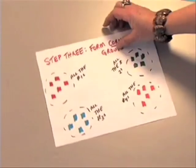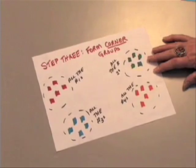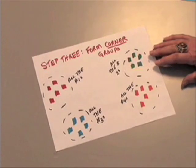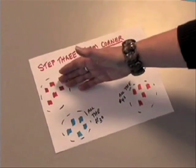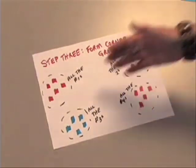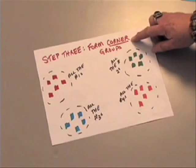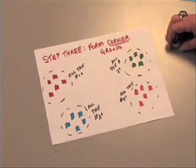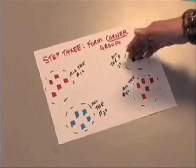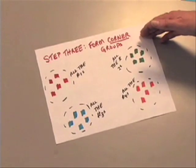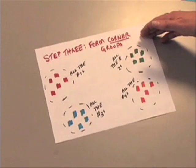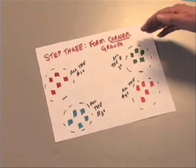Step 3. Have groups of like-numbered students gather at designated locations around the room. All the ones in one spot, all the twos in another, all the threes in another, all the fours in another. These are called corner groups. If you have a very large class, you may need to set up multiple corner groups of the same number. Try to have no more than 6 or 7 people in each corner group to make discussion easier.